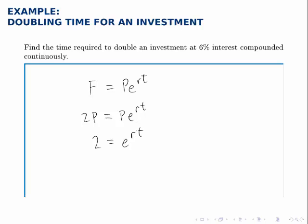So now I need to solve this for t. R is given, specifically we're told that R is 6% or 0.06, so I need to solve for t. Anytime we need to solve an equation where the unknown that we're solving for is in the exponent, we need to use logarithms to do that.